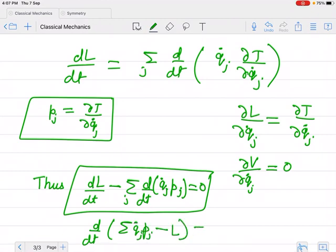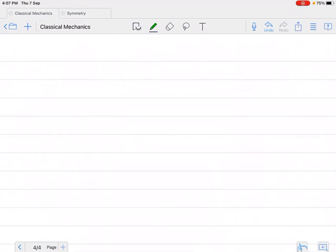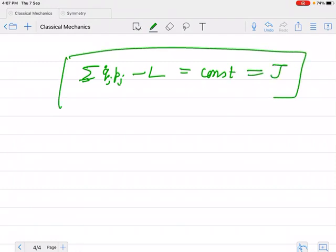This constant (qj dot times pj minus L) equals a constant. This constant is known as the Jacobi integral. This constant of motion is known as the Jacobi integral.